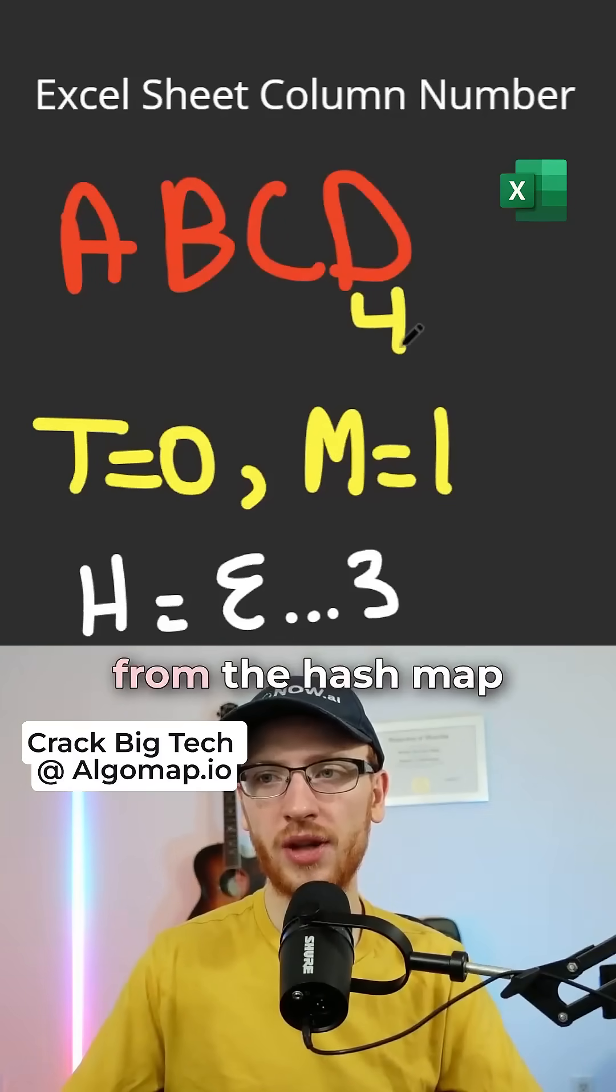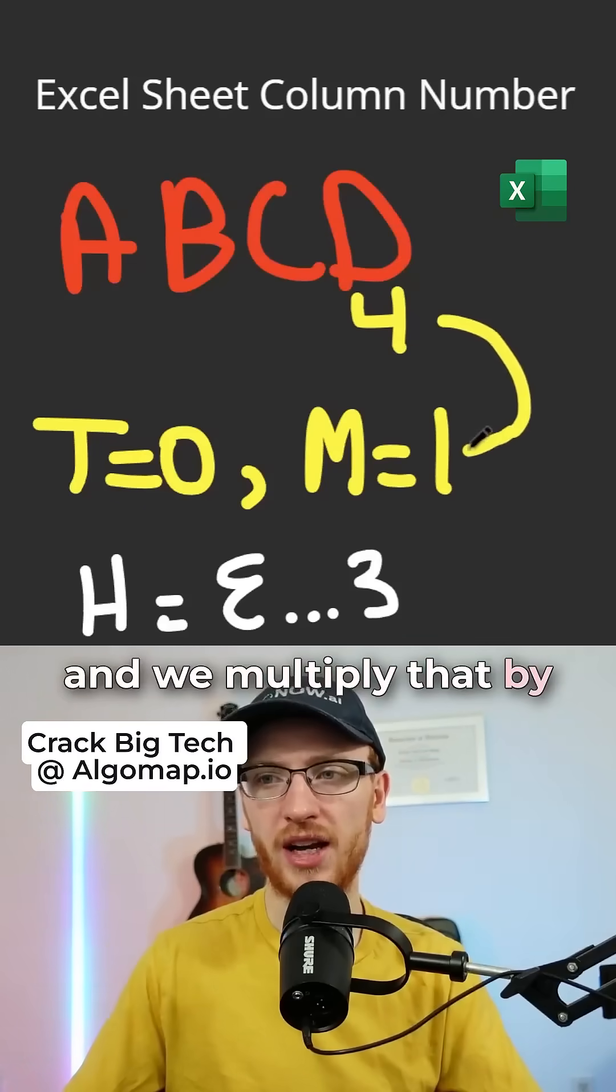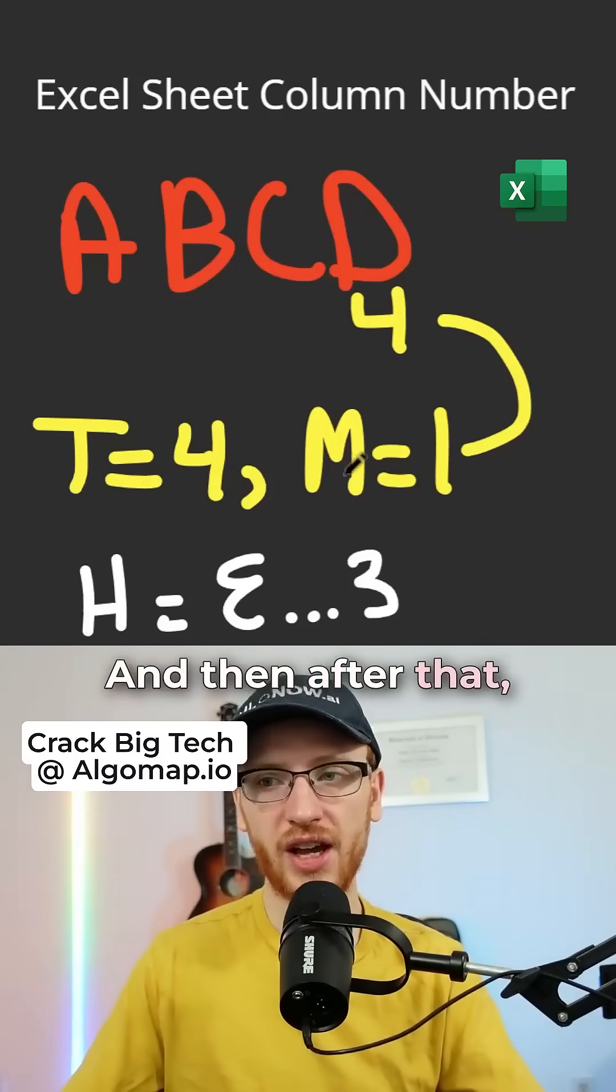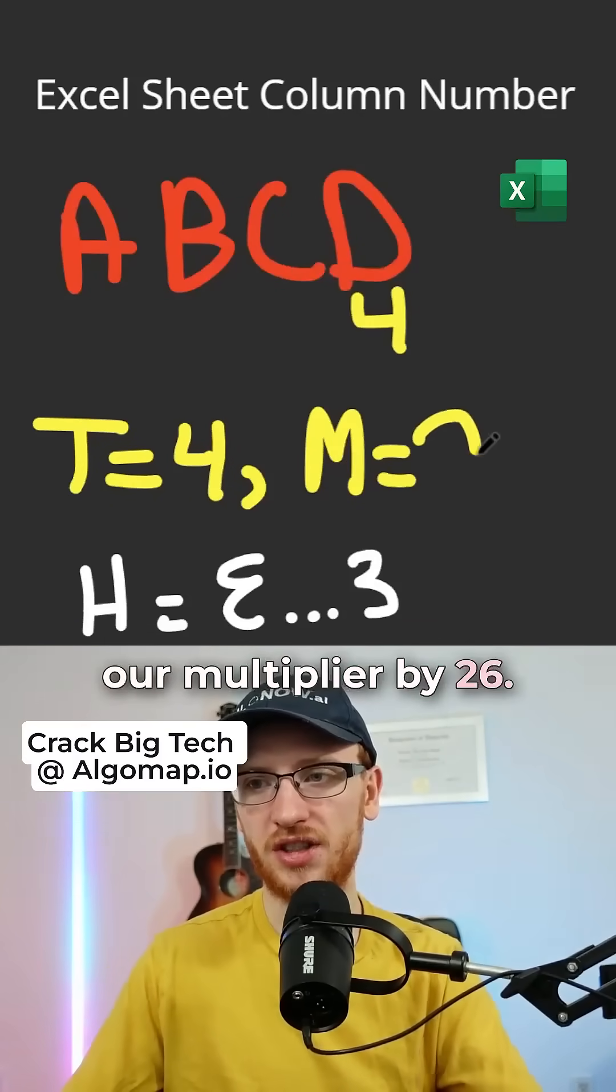Now at every step, we get the value from the hash map, and we multiply that by M. That gives 4, we're going to add 4 to our total, and then after that, we need to multiply our multiplier by 26.